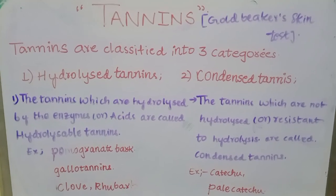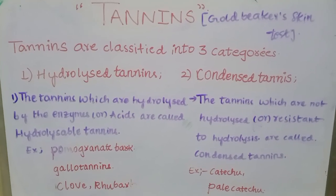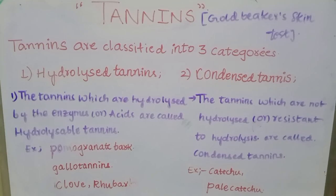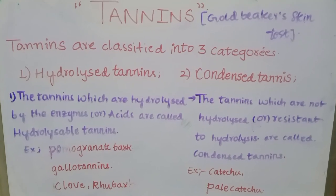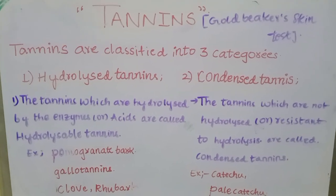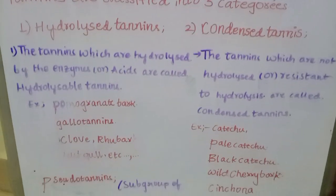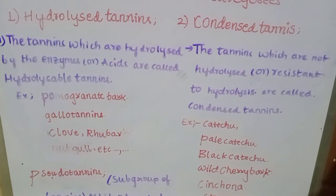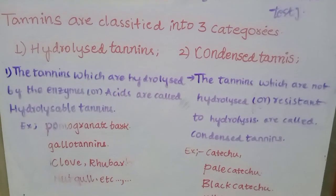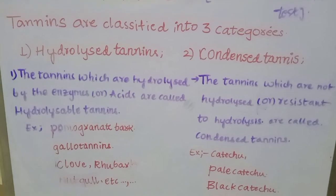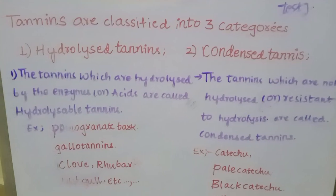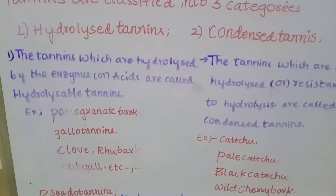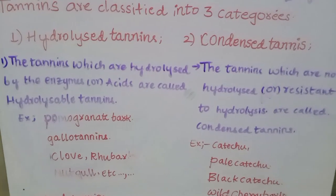The three categories of tannins are: hydrolyzable tannins, condensed tannins, and pseudo tannins. Hydrolyzable tannins are those which are hydrolyzed by enzymes or acids.